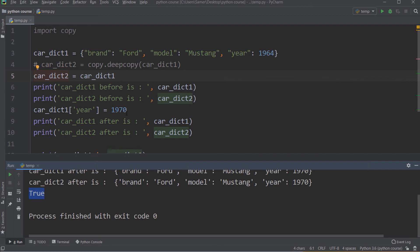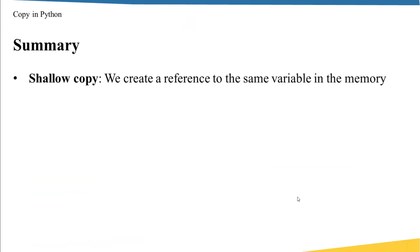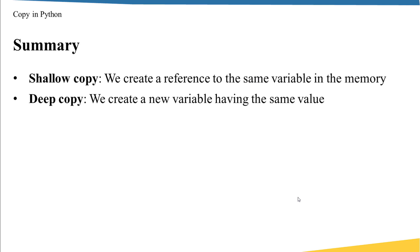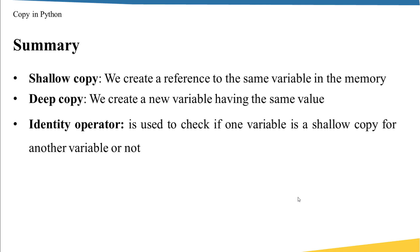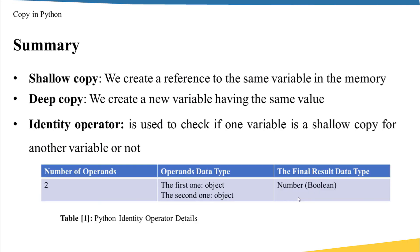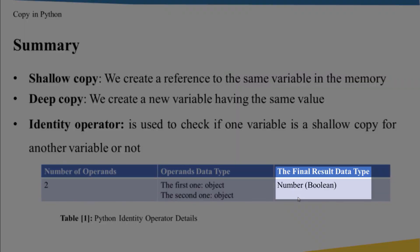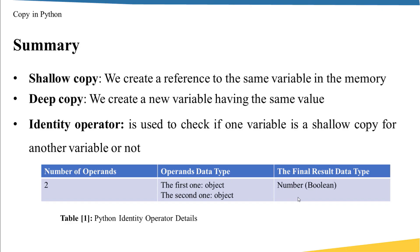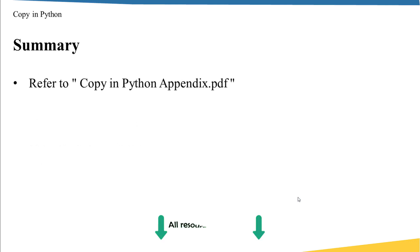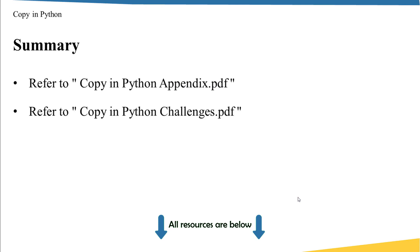Now let's summarize what we have learned in this lecture. We talked about shallow copy, where we are creating a reference to the same variable in memory. Whereas in deep copy, we are creating a new standalone variable with its own values. After that, we talked about the identity operator, which is useful for checking if one variable is a shallow copy of another. This table summarizes the identity operator: it takes two mutable operands and returns a Boolean — true if one variable is a shallow copy of the other, false otherwise. Please refer to the copy in Python appendix and the challenges file to practice what you have learned.